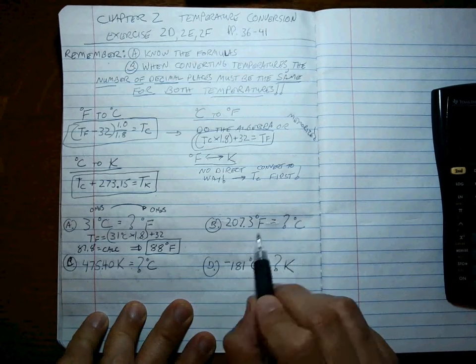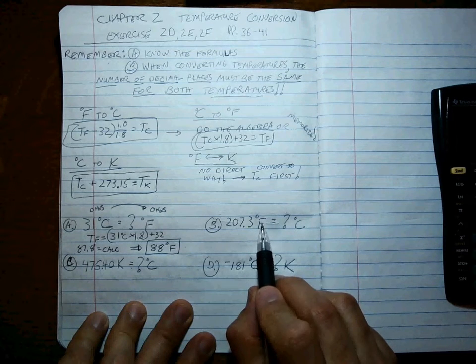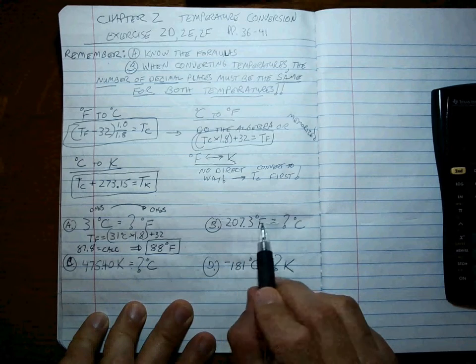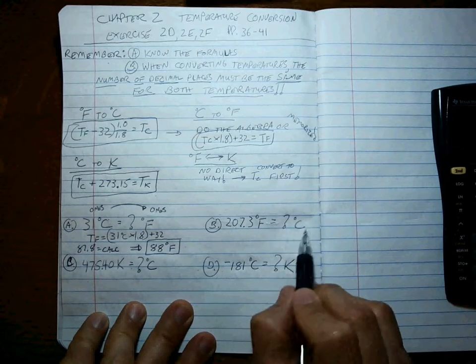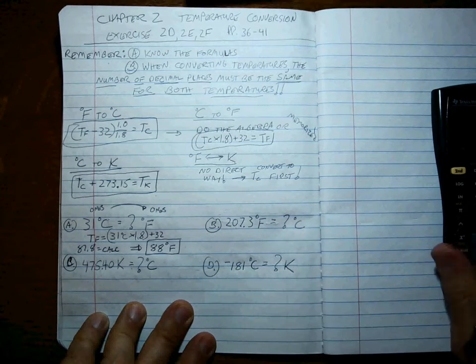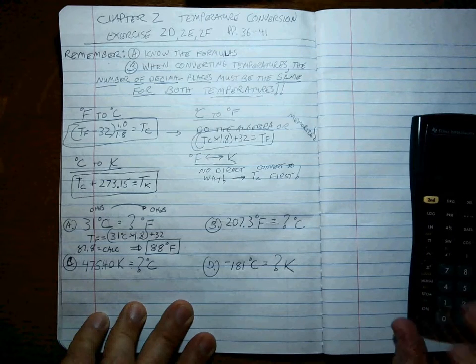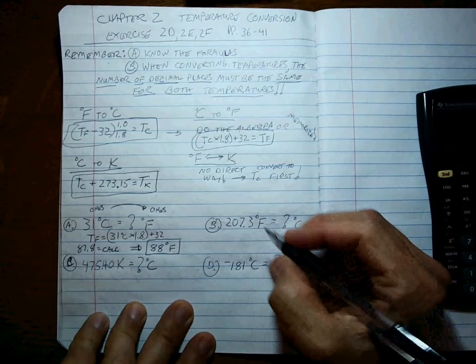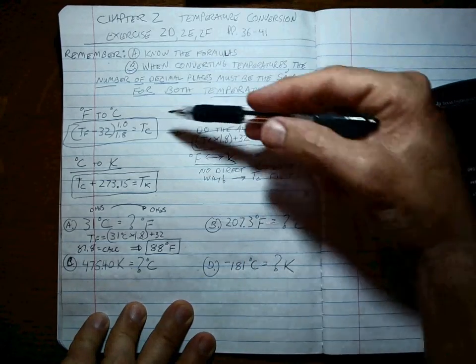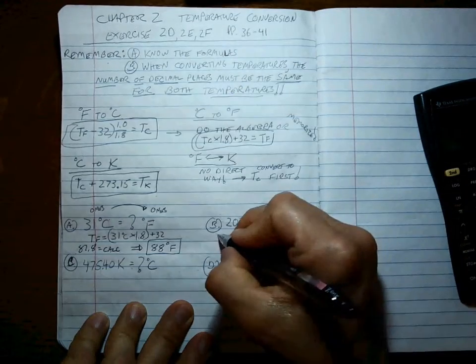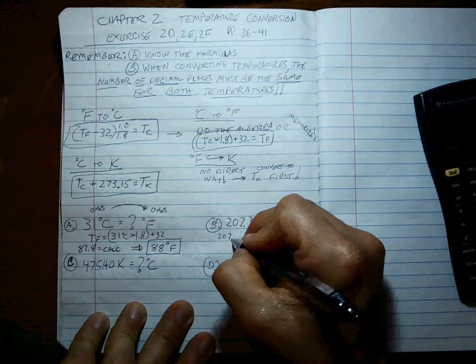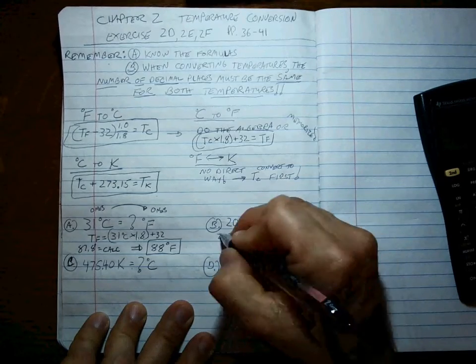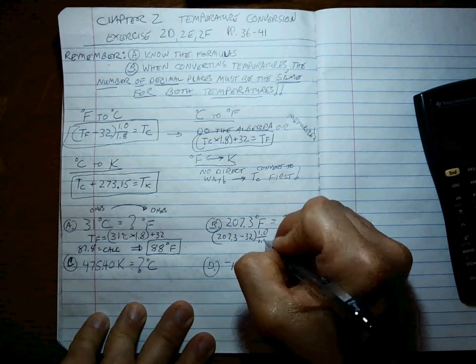Okay, Fahrenheit to Celsius. Well, let's think about this. The temperature of boiling in Fahrenheit is 212. So this is really close to boiling, which means we're going to be really close to boiling in Celsius. Well, what's boiling in Celsius? It's 100. So this final answer better be darn close. All right, so we're going to use this formula this time. So it's 207.3 minus 32 times 1.0 over 1.8.